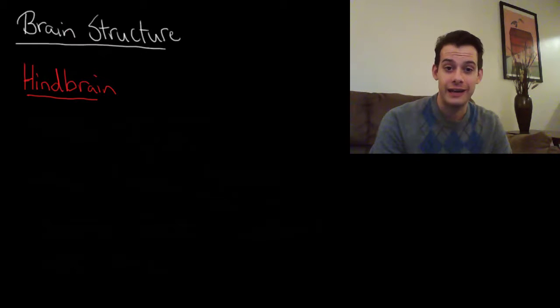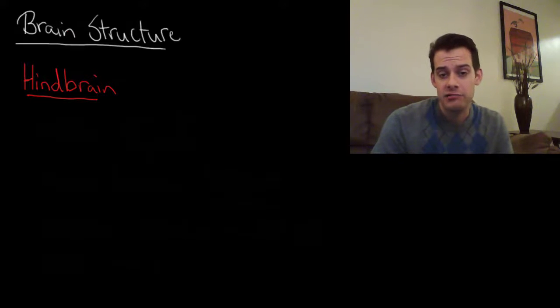Hi, I'm Michael Corayer and this is Psych Exam Review. In this video and the next few videos we're going to be looking at parts of the brain. Now we can divide the brain up into three main regions. We have the hindbrain, the midbrain, and the forebrain.